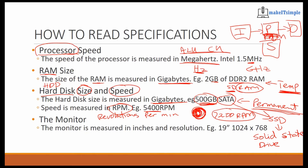A monitor is measured in inches and resolution. For example, you might have a 19-inch monitor with a resolution of 1024 by 768 pixels. The more pixels you have, the higher the resolution — we covered that already.